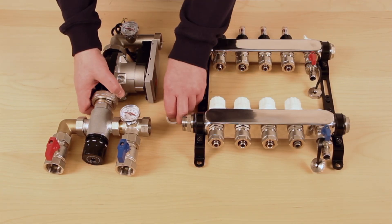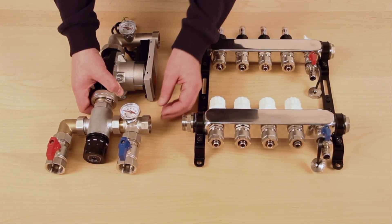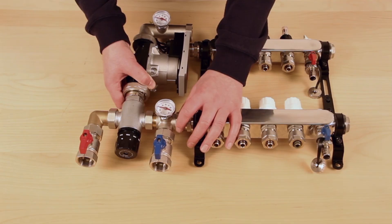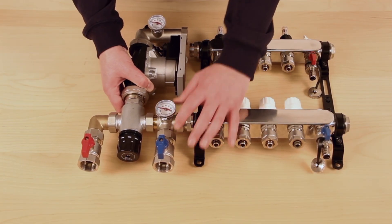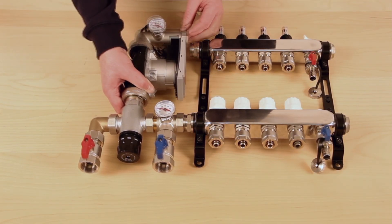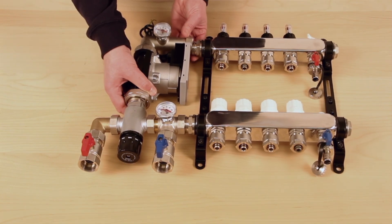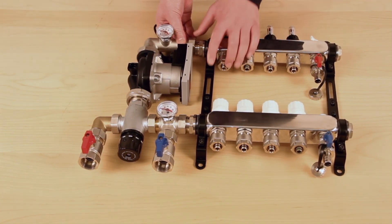When connecting the pump set to a manifold, ensure the supplied washers are fitted for both return and flow bars. Offer up the pump set assembly and loosely attach the return connector and then the flow bar connector. Tighten both by hand.